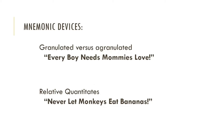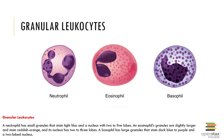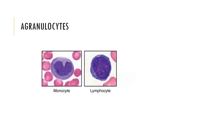To remember the relative quantities of leukocytes, use the expression 'never let monkeys eat bananas.' This means neutrophils are the most numerous and basophils are the least numerous. That distinction is important for healthcare. To summarize: eosinophils, basophils, and neutrophils are granular; monocytes and lymphocytes are agranular.